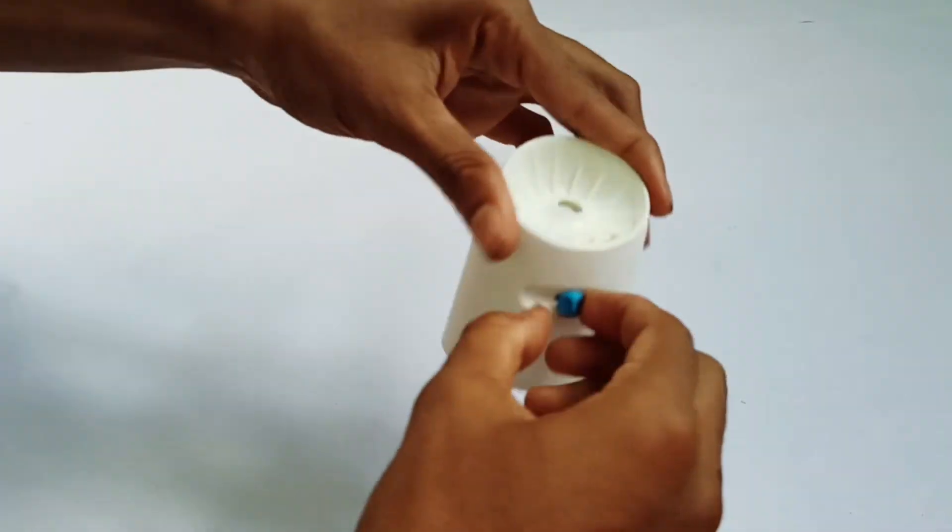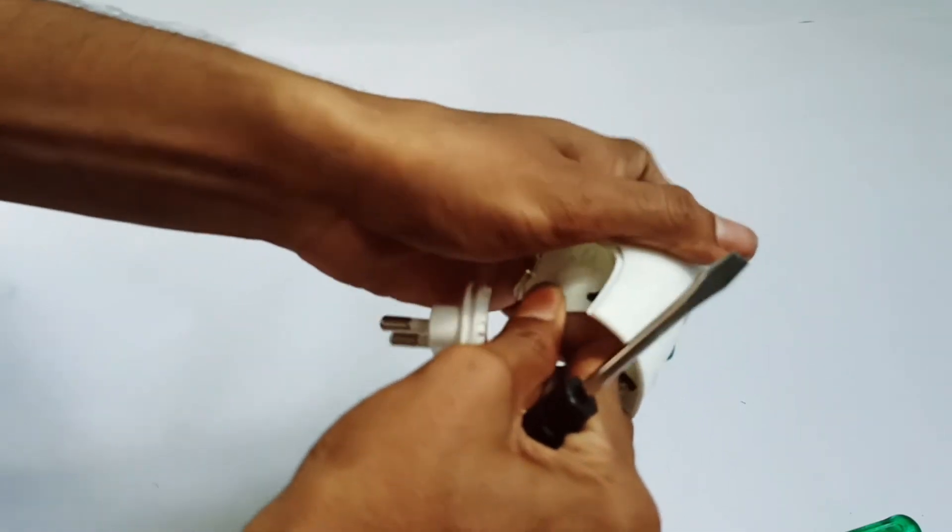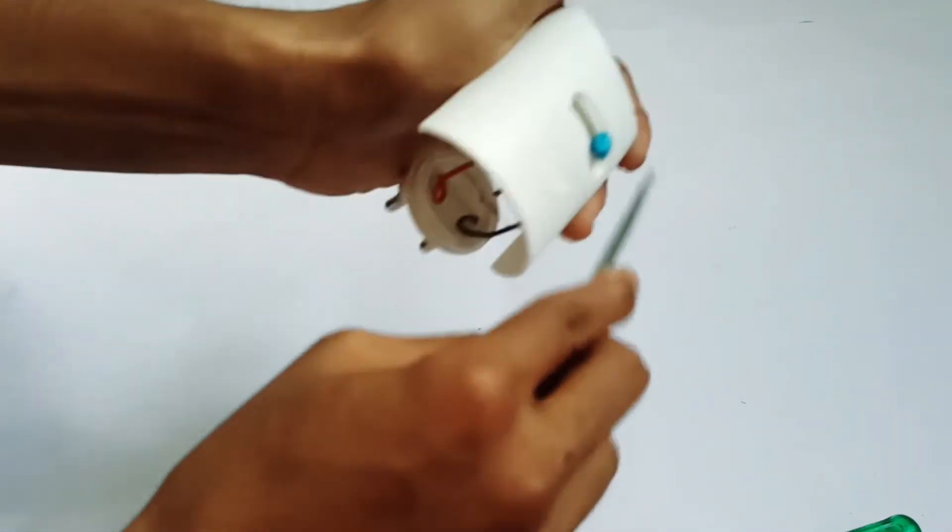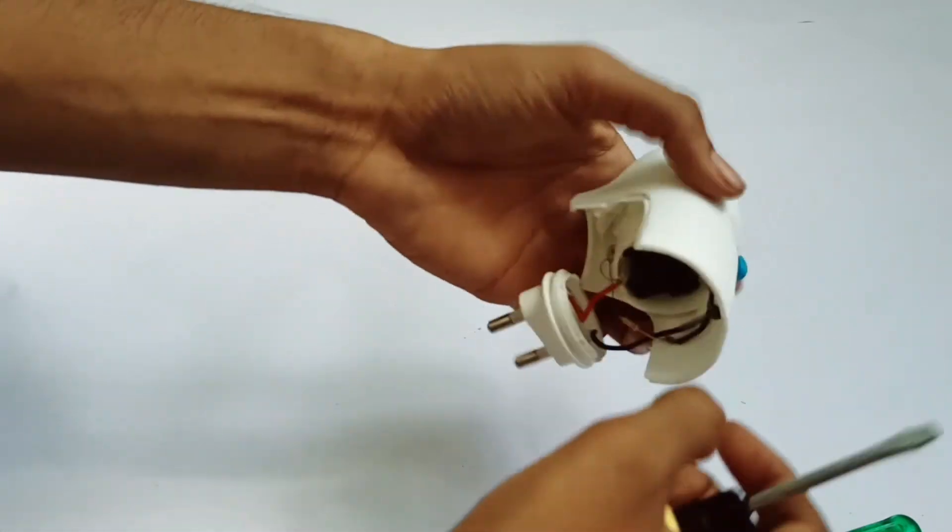See, slowly, because the wire will break. See, it came out and then we have to remove this out. It's slightly hot. We have to remove this. It has to come out but it is not coming, wait.